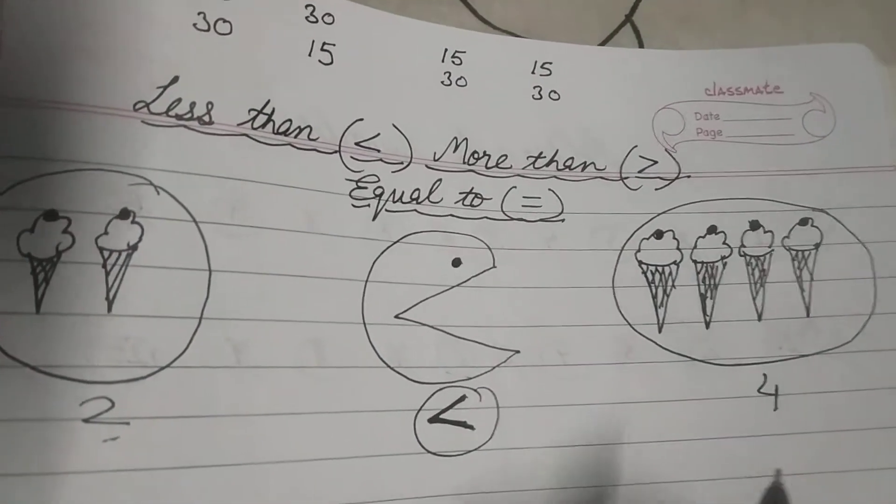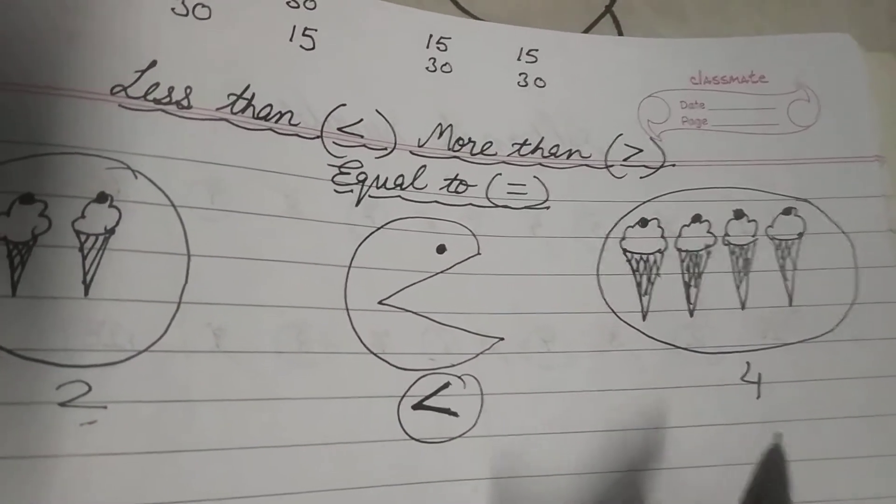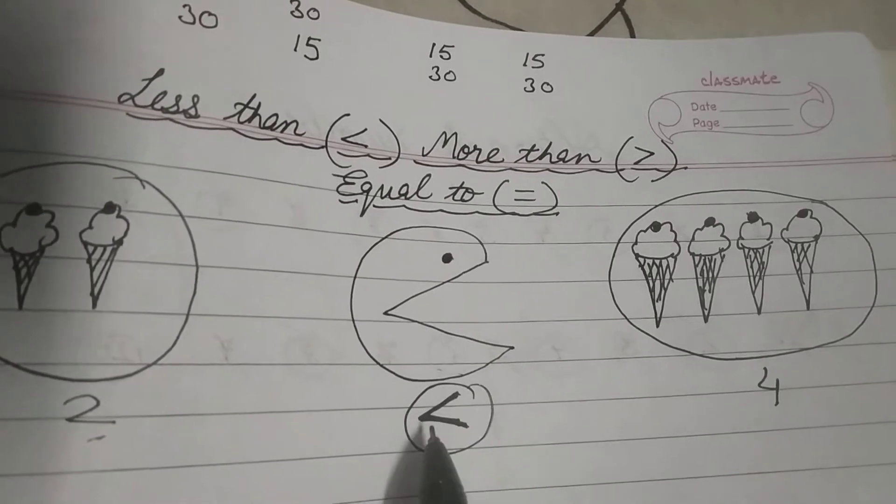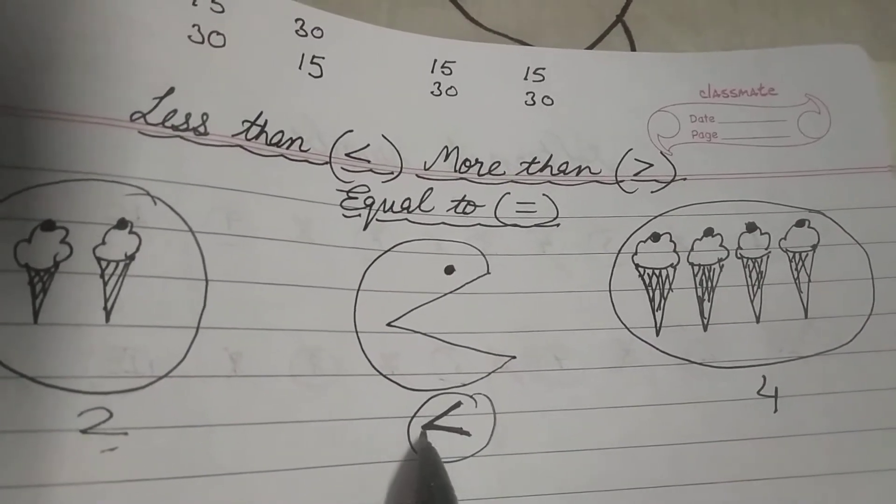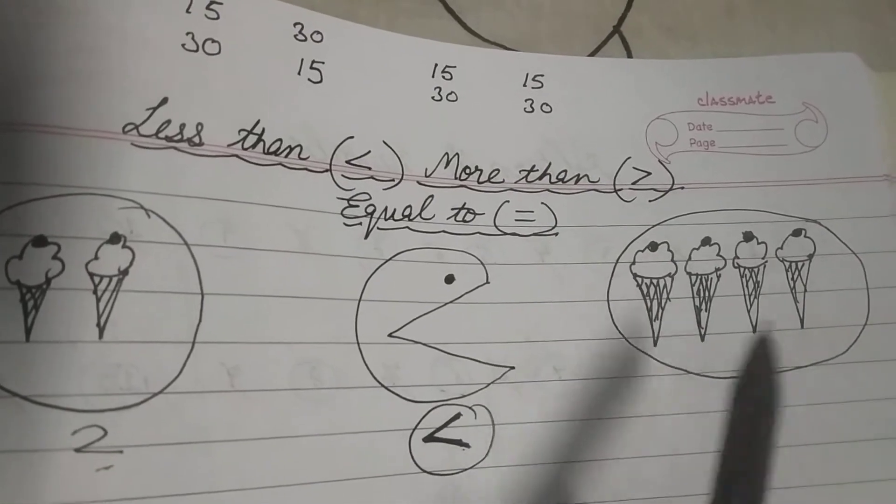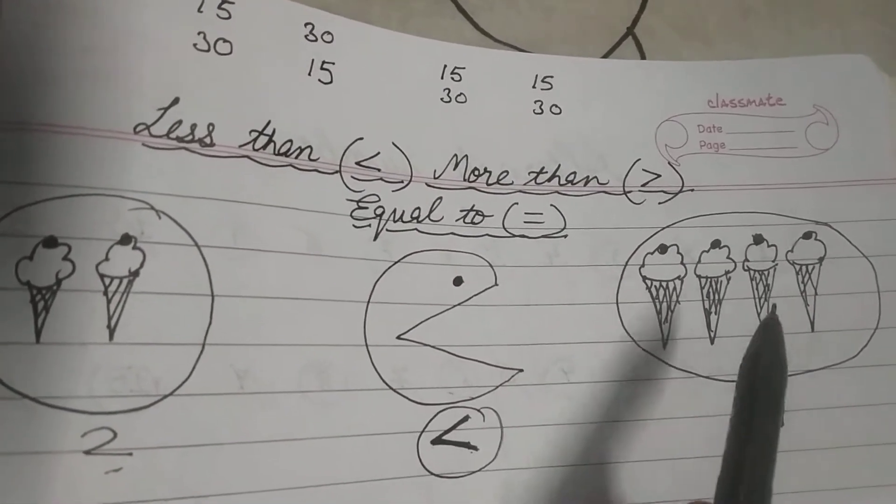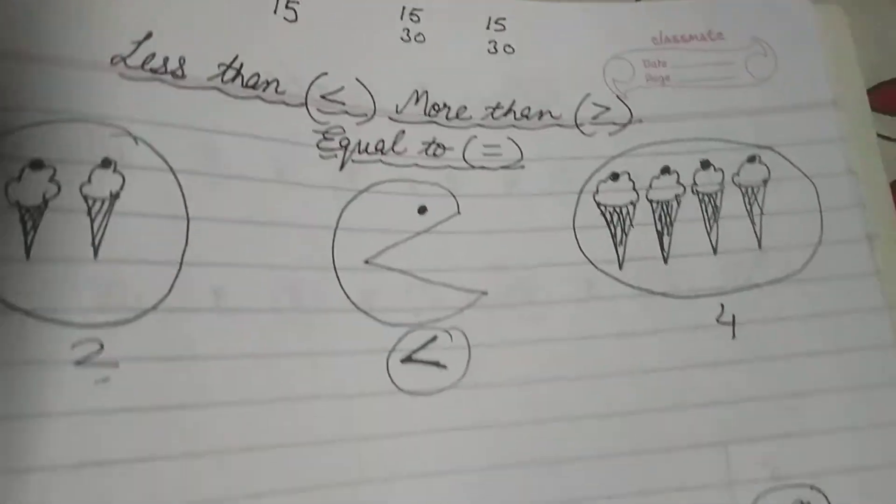Aapko pata hai 2, 4 se kam hota hai, chota hota hai na? So 2 is less than 4. Or symbol kaise lagega? Uska sab se achha tariqa hai yaad rakhne ka, ki you just remember ki jidhar zyada cheez hogi, udhar you will open your mouth. Udhar aap apna mooh kholenge usko khane ke liye, right?